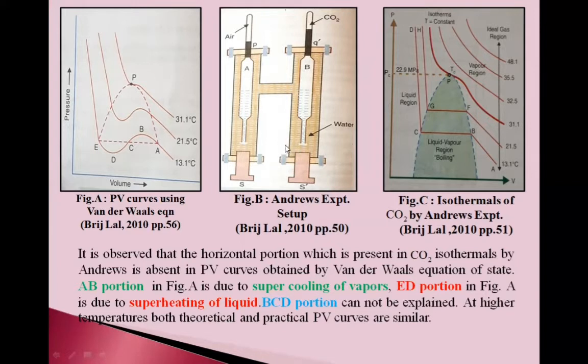First we will discuss this setup. Here A and B are two glass tubes with thick capillary tubes on top. Here mercury pellet is there. Here air and here CO2 gas is there. And these A and A-dash screws apply pressure to the system. And here is water in a U-shaped copper vessel.